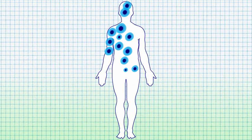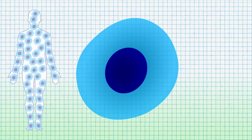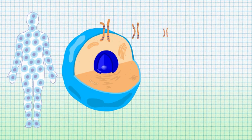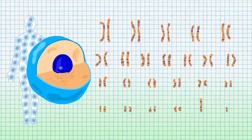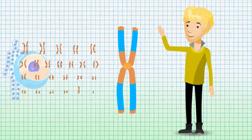Human beings are made up of millions of cells. Inside every cell lies a nucleus which holds 46 chromosomes. Our chromosomes carry genes which make us into human beings.